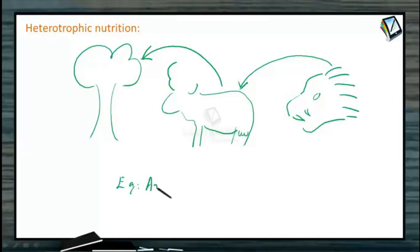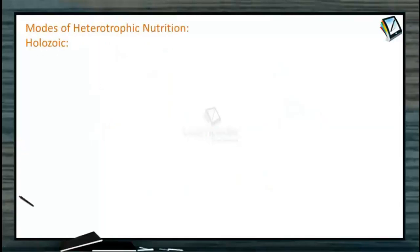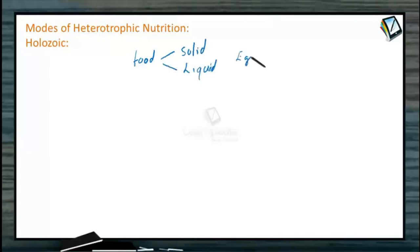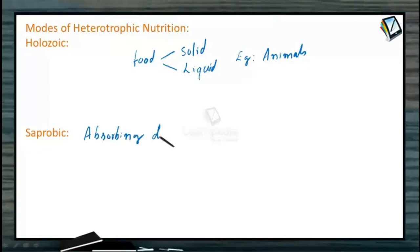Examples of heterotrophic nutrition include all animals, fungi, and bacteria. Modes of heterotrophic nutrition: Holozoic nutrition is the consuming of whole food by animals; this food can be either in solid or liquid state. Saprobic nutrition is a method of absorbing decaying organic matter, performed by some animals apart from fungi and some microbes.